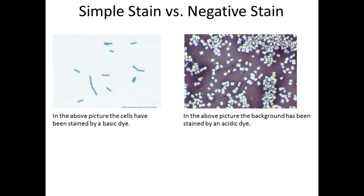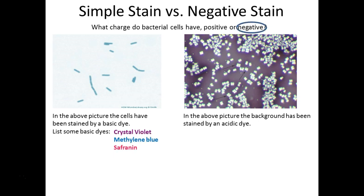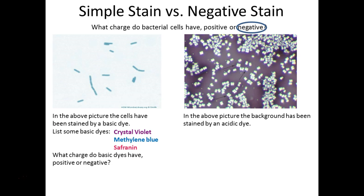For simple staining, we use a basic dye. What charge does a basic dye have? Positive. What charge do cells have? Negative. So we use a lot of basic dyes because it stains the cell — crystal violet, methylene blue, safranin — all of which you will have used or will use today. They're positive, cells are negative, and opposite charges attract — that's why the cells get stained.